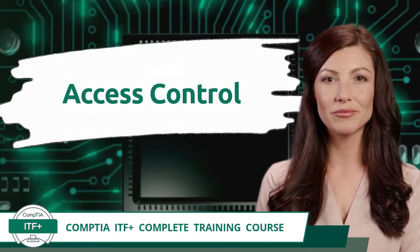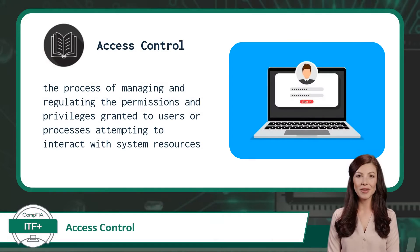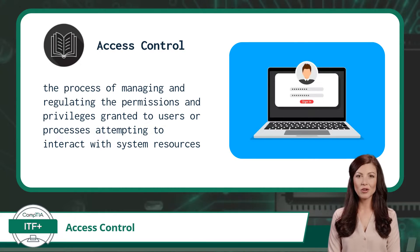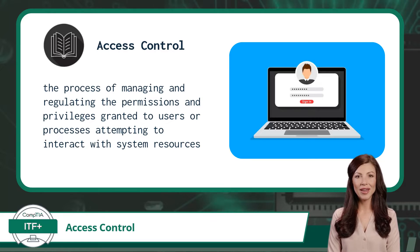Access Control, in the context of an operating system, refers to the process of managing and regulating the permissions and privileges granted to users or processes attempting to interact with system resources. It ensures that only authorized entities can access specific resources, preventing unauthorized access and maintaining the security and integrity of the system.